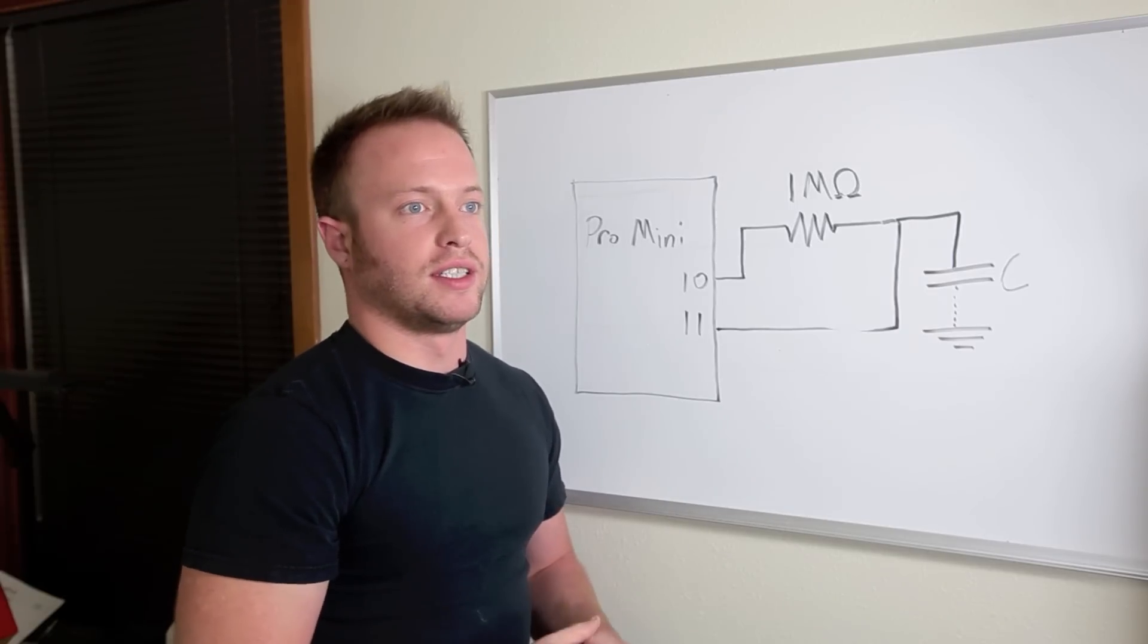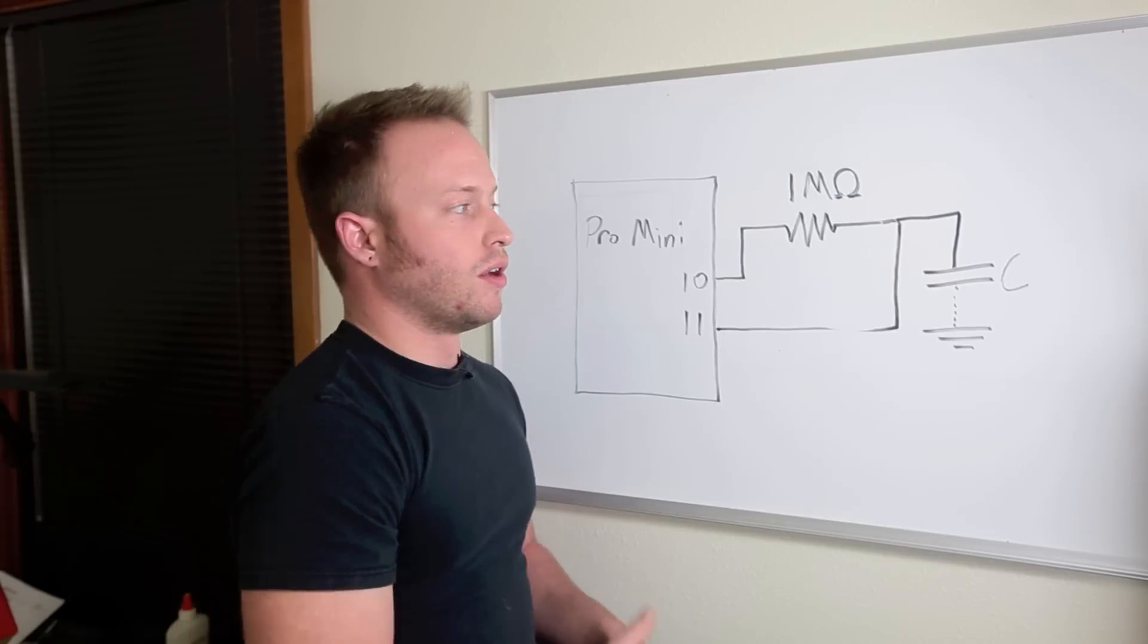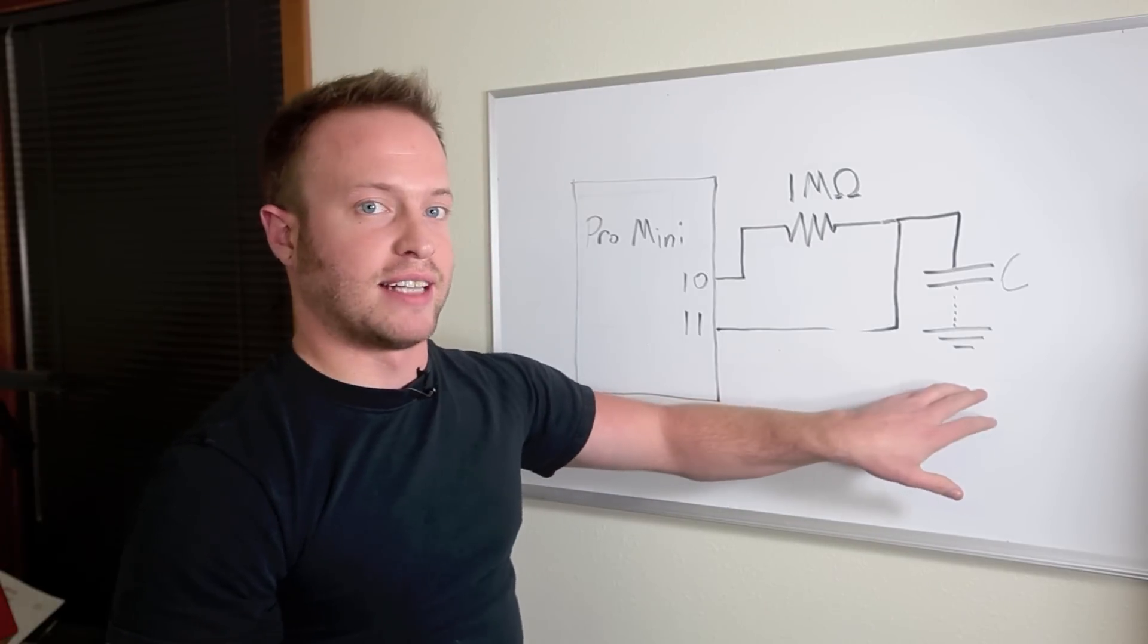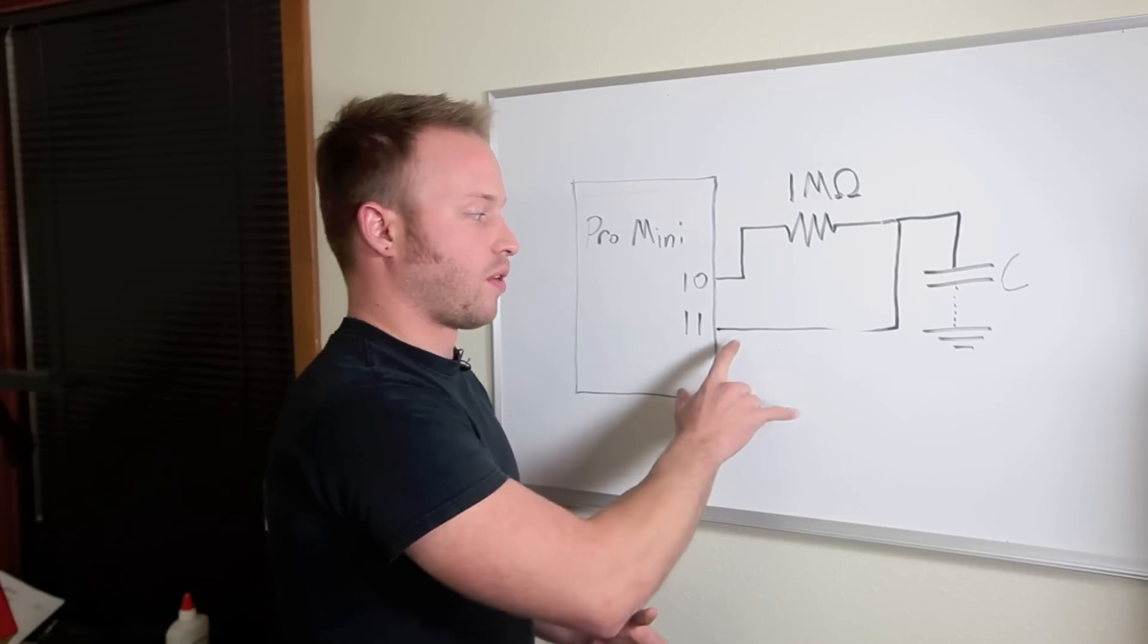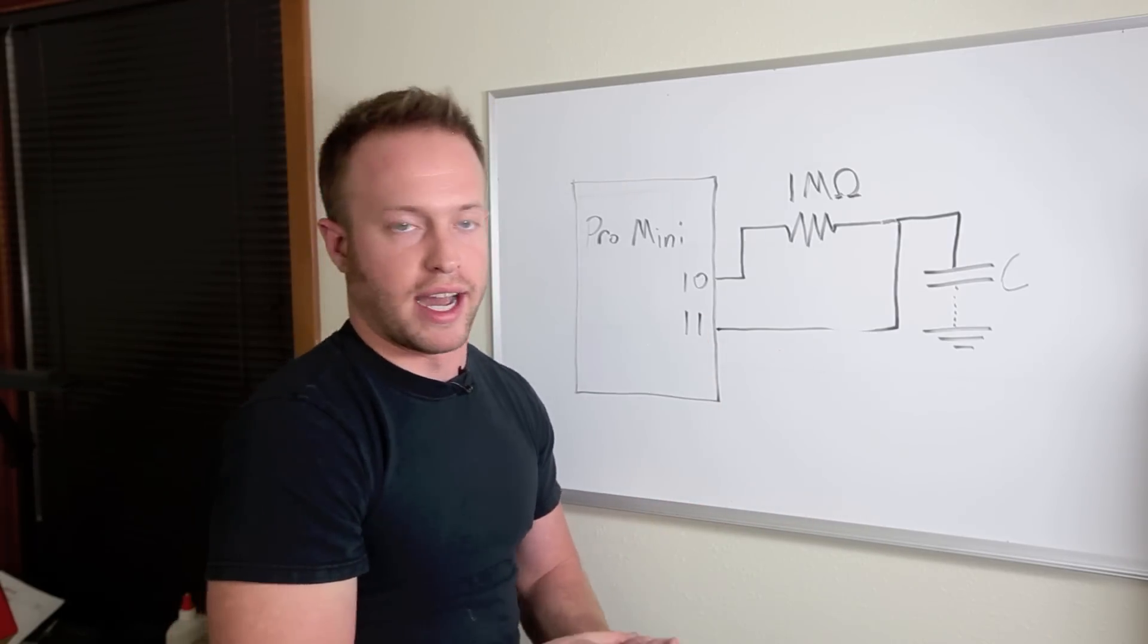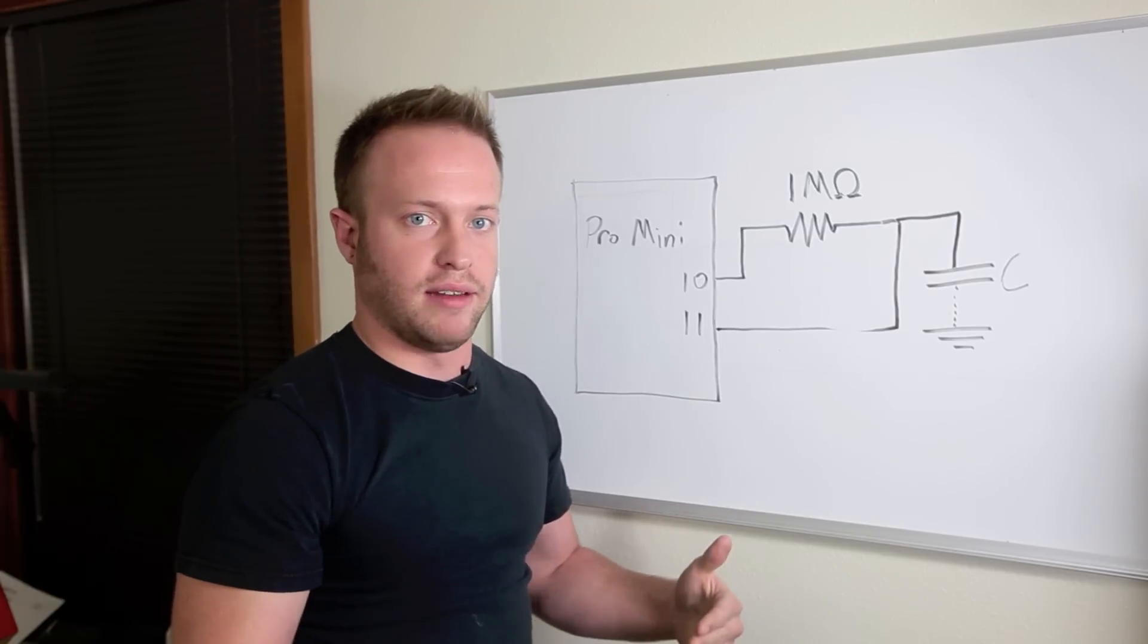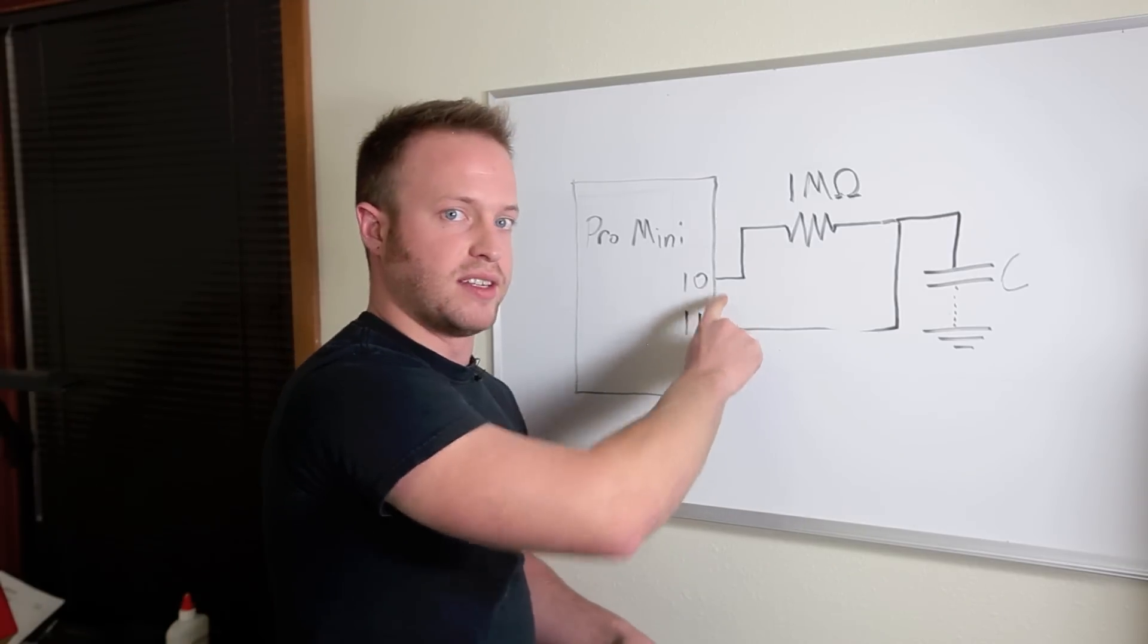You can then use that time value to see if it has changed. If it has gone up or down, you know that there has been a change in this capacitance. Because when there's more capacitance, the longer it will take for pin 11 to go high. When there's less, the less time it'll take for pin 11 to go high. So you find what is a normal state and then check for changes each time that pin 10 toggles.